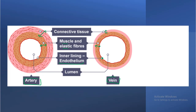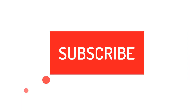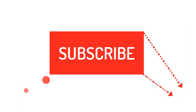This circle, or the hole through which blood passes, is known as the lumen. This is the inner lining known as the endothelium. Please subscribe to the channel.